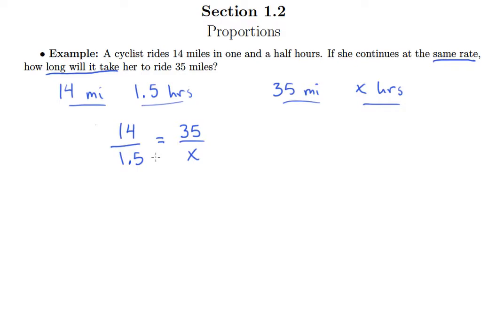Here we just have the familiar setup of proportion to solve. We'll go ahead and take our cross product first. So 14 times x, 1.5 times 35. Putting the 14 in front as our convention and then 1.5 times 35.